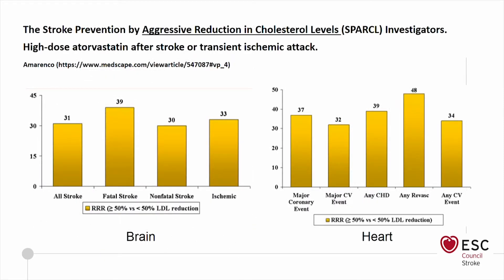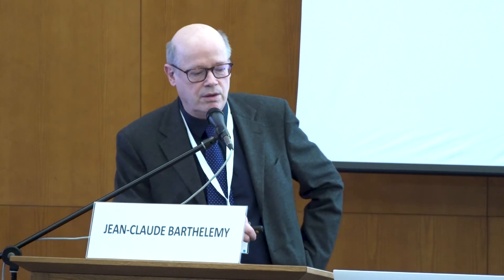Very interestingly, statins were particularly studied for heart diseases, and here you have the relative risk ratio for heart diseases considering a cholesterol decrease of more than 50% or less than 50%. In the brain, you have exactly the same benefit. So statins are a very powerful treatment to prevent stroke. Thank you very much.